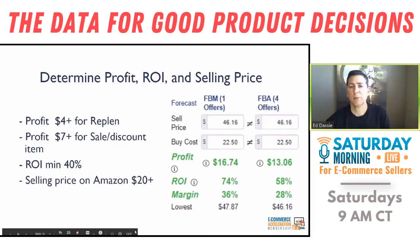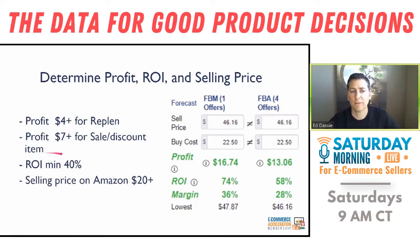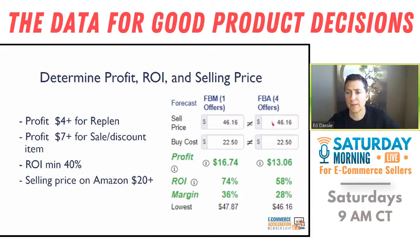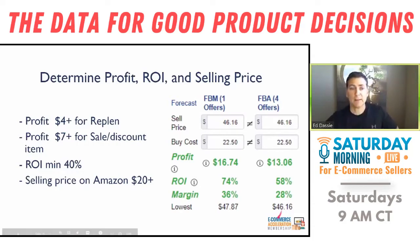Let's go into determining the profit and the selling price. I'm looking for $4 profit for a replenishable item, $7 profit for any kind of sale or discounted item, 35–40% ROI on both, and a selling price of at least $20. In this example, we've got over $20 on Amazon — that's the buy cost — and we have good profit, great ROI over 40%, and great margin. So it meets all the criteria — that's one I'll look at.